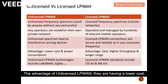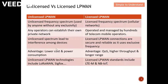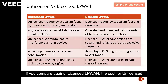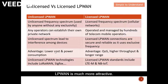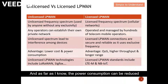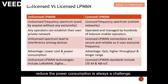The advantage of unlicensed LPWAN is lower cost compared to licensed LPWAN — the cost is much more attractive. Also, power consumption can be reduced drastically, because using a power-hungry technology like LTE makes reducing power consumption always a challenge.